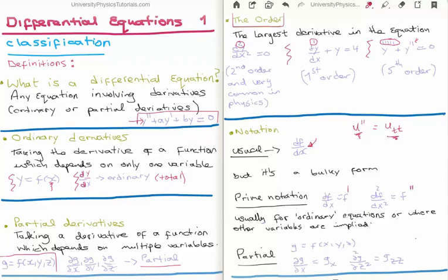We can also use subscript notation for partials. If g is a function of x, y, and z, then ∂g/∂x becomes g_x, and ∂²g/∂z² becomes g_zz — just like u_tt implies the second derivative with respect to t. Here I'm implying that we're differentiating with respect to all spatial coordinates, because u is a function of x, y, and z.